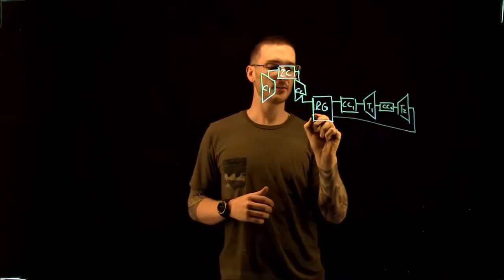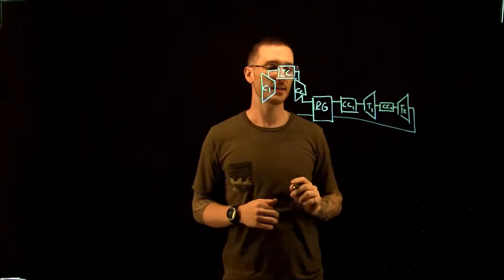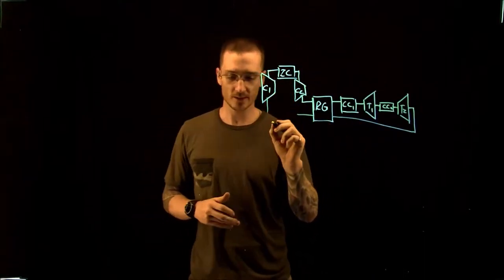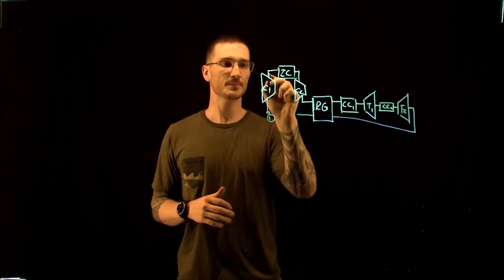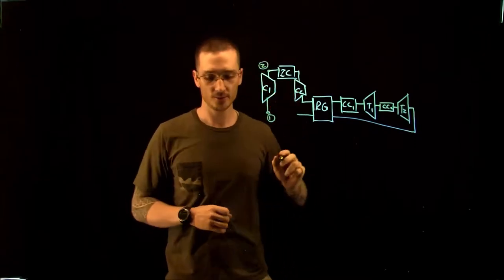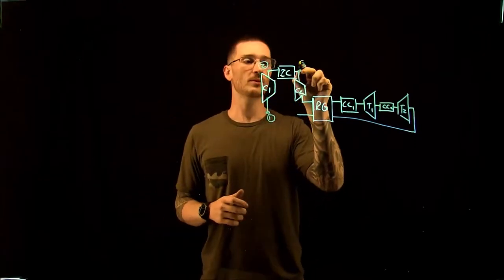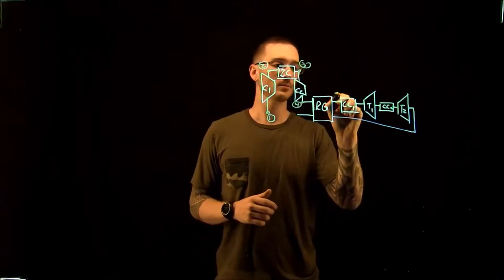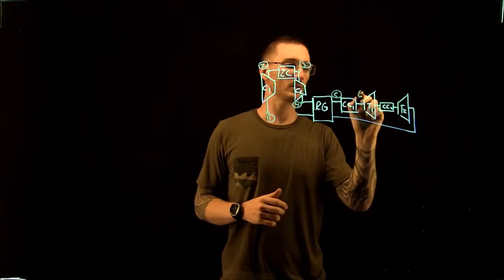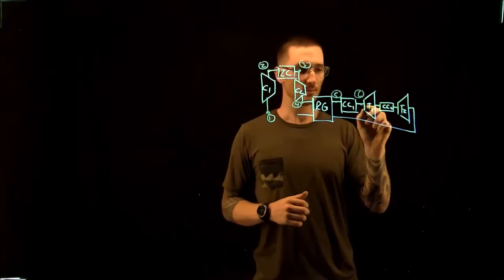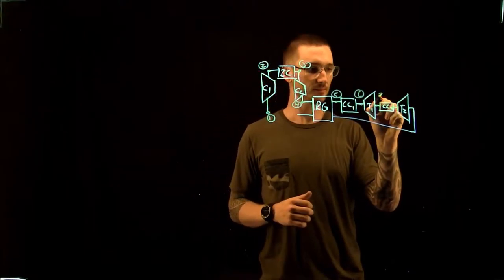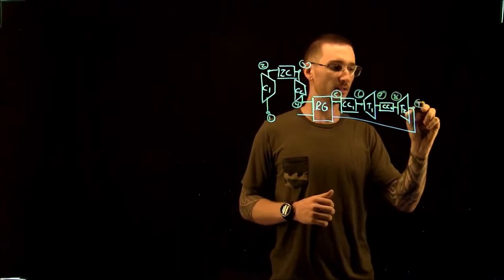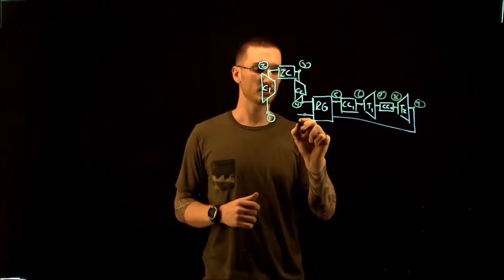We're taking the air from our second turbine and going through our regenerator. We label the state points: 0.1, 0.2, 0.3, 0.4, 0.5, 0.6, 0.7, 0.8, 0.9, and finally 0.10.